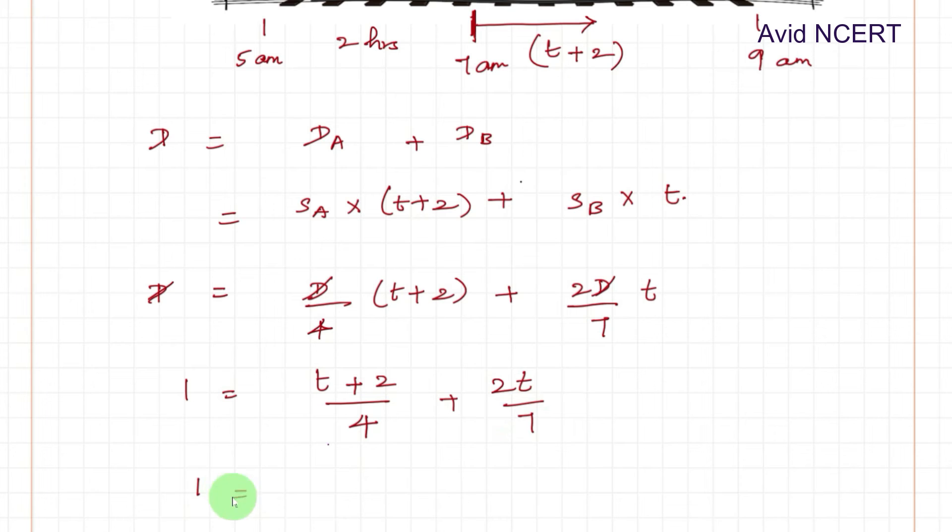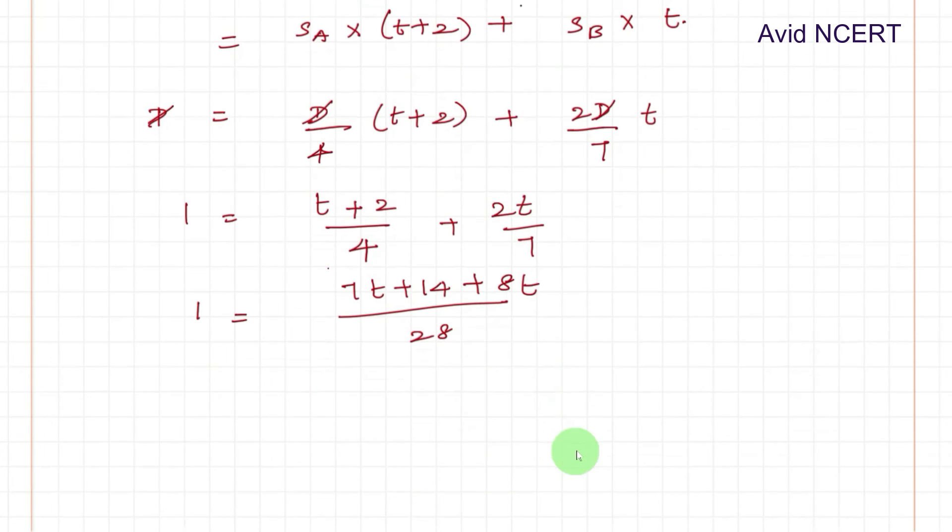Finding the LCM, 1 equals 28. 4 times 7 is 28. So 7T plus 14 plus 7 times 4 is 28, so 4 times 2 is 8T. So which equals cross multiplication, 28 equals 7T plus 8T is 15T plus 14. So 14 goes to the other side, so 28 minus 14 equals 15T.